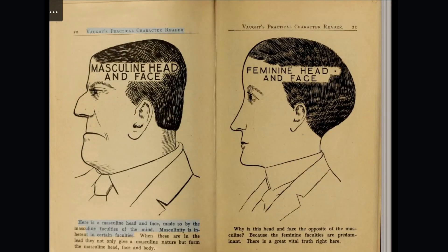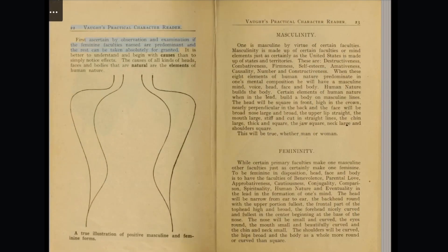Vought's Practical Character Reader. Here is a masculine head and face, made so by certain faculties of the mind. Masculinity is in certain faculties. When these are in the lead they not only give a masculine nature but form the masculine head, face, and body. Why is this head and face the opposite of the masculine? Because the feminine faculties are predominant. There is a great vital truth right here. It is better to understand and begin with causes than to simply notice effects. The causes of all kinds of heads and bodies that are natural are the elements of human nature.